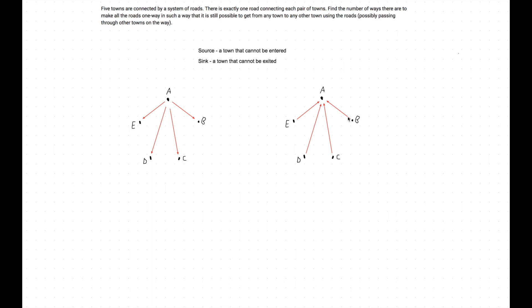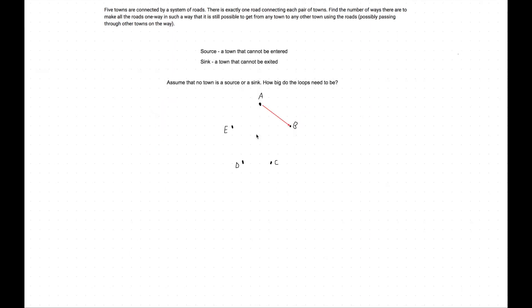One very powerful tool in graph theory when dealing with directed edges is to look at loops and their size. We only have five towns—not something like 2017 towns—so that makes it a lot easier to play around with the graph and figure out how big the loops need to be.